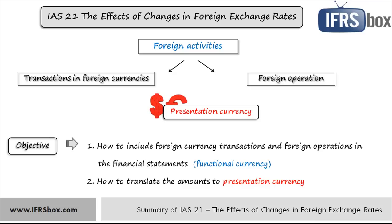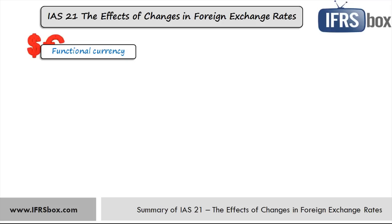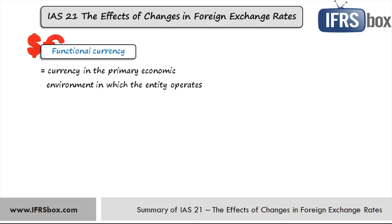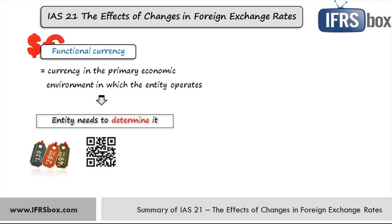Let's explain the difference between the entity's functional and presentation currency first. A functional currency is the currency of the primary economic environment in which the entity operates — normally the one in which the entity primarily generates and expends cash. The entity needs to determine it according to its own activities, environment, and operations, so it is not a voluntary choice. In general, the functional currency is the same as the currency of the country where the company is located, but this is not always the case. It is basically the currency that influences sales prices, prices of goods or services, and the company's labor costs.